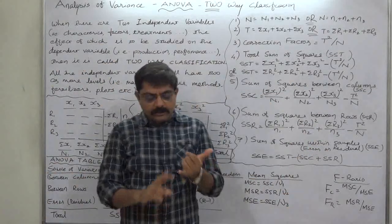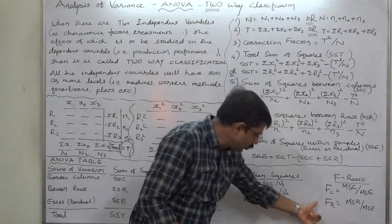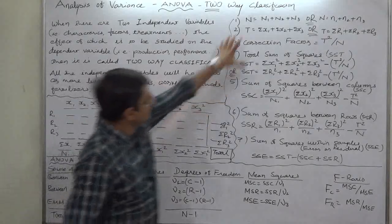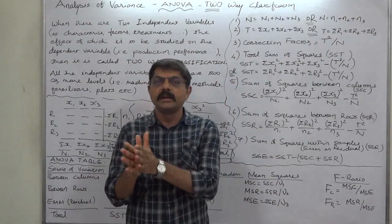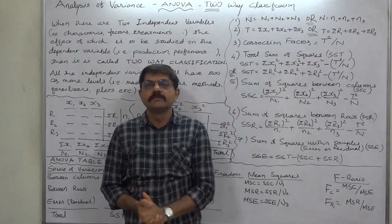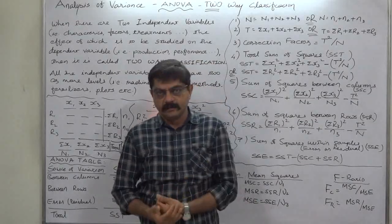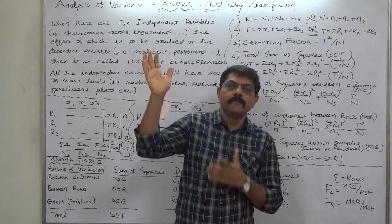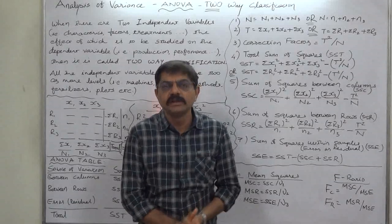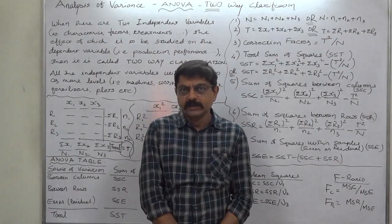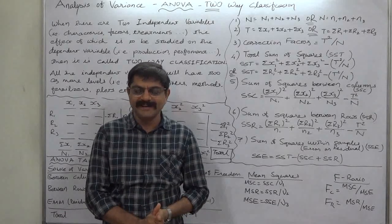There must be a null hypothesis and alternative hypothesis for columns, and a null hypothesis and alternative hypothesis for rows. After calculations, ANOVA table, critical values for columns and rows, and comparison of calculated values with respective critical values, there must be two separate conclusions — one for columns and one for rows. The procedure is lengthier compared to one-way classification but very similar. From the next lecture, we will start discussion on various problems on two-way classification. Thank you very much.